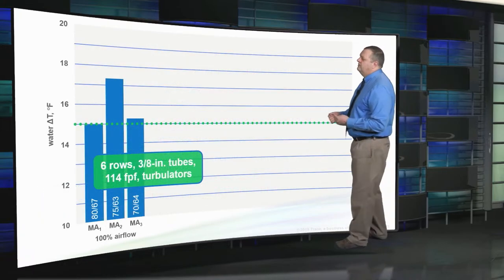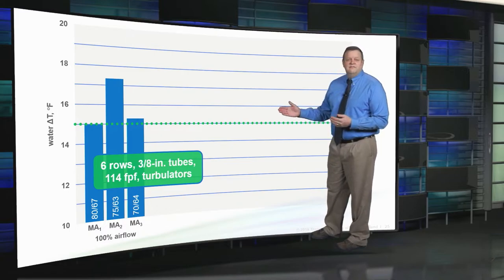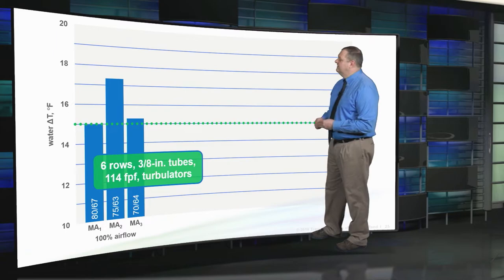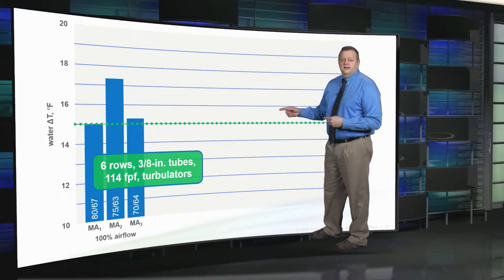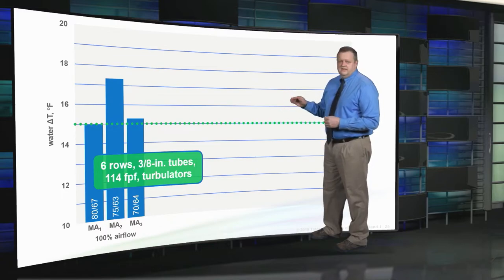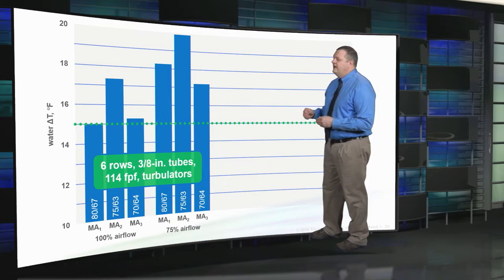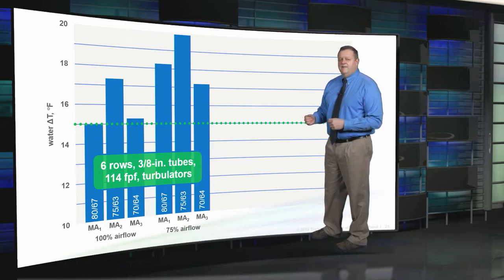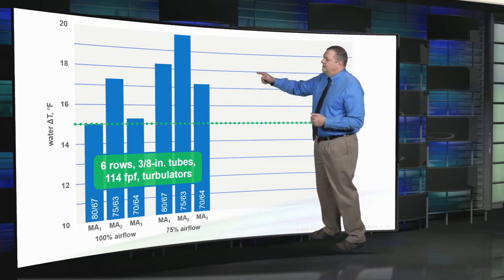To analyze how delta T is affected by part load operation, we chose two other less severe outdoor conditions when the coil will still be active, and calculated coil performance at these three mixed air conditions at two different airflows. Here's the 6-row 3/8 inch coil with turbulators. At design conditions — the leftmost column — the coil is selected to achieve 15 degree delta T. At the two part load entering air conditions, still with design airflow, the coil is able to maintain and even increase that delta T.